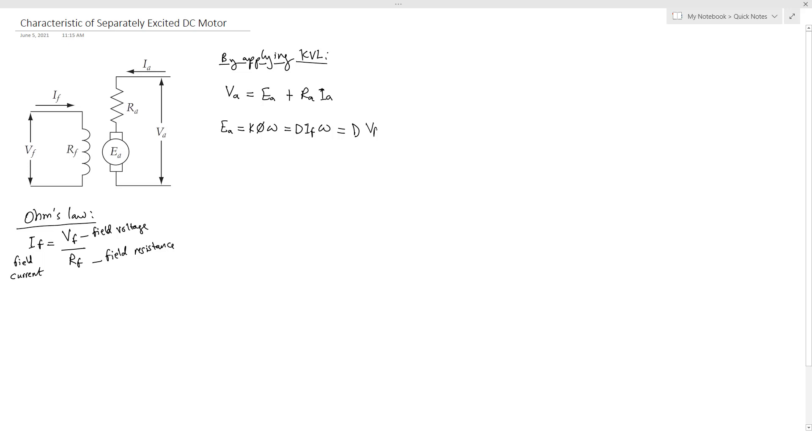And also we know that the torque, so here the shaft is rotating, so the torque equals K Phi IA. So IA will equal torque divided by K Phi.